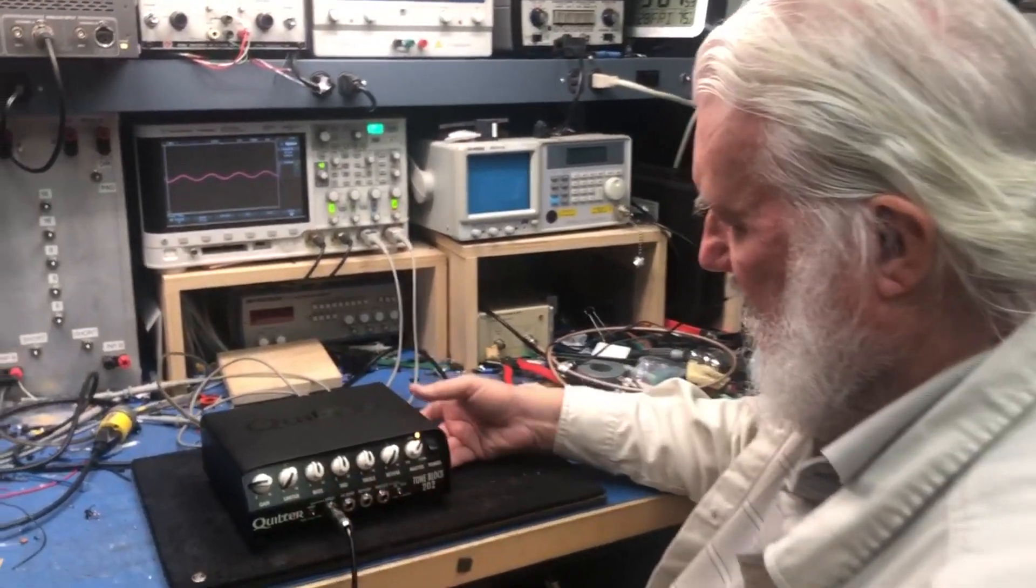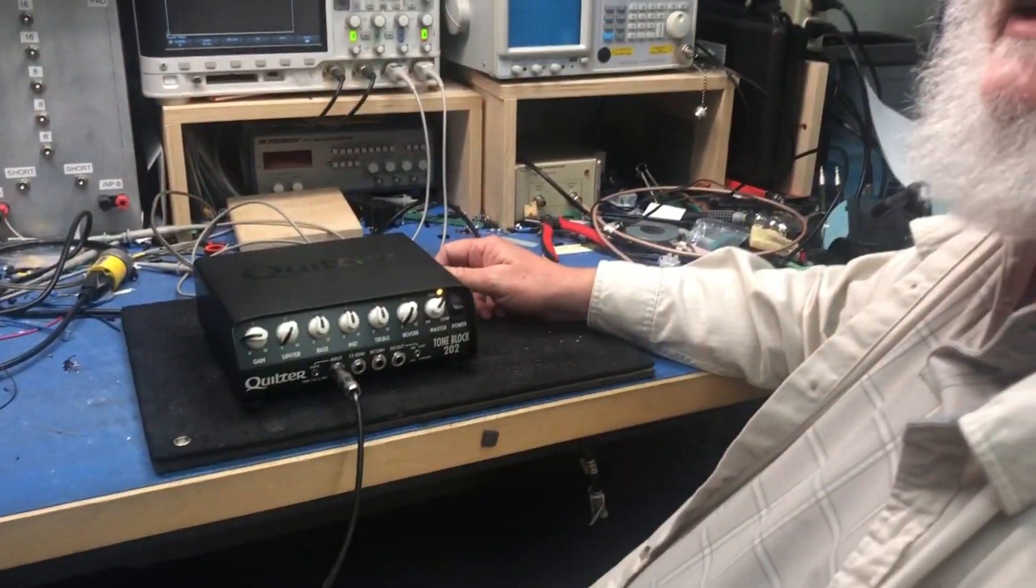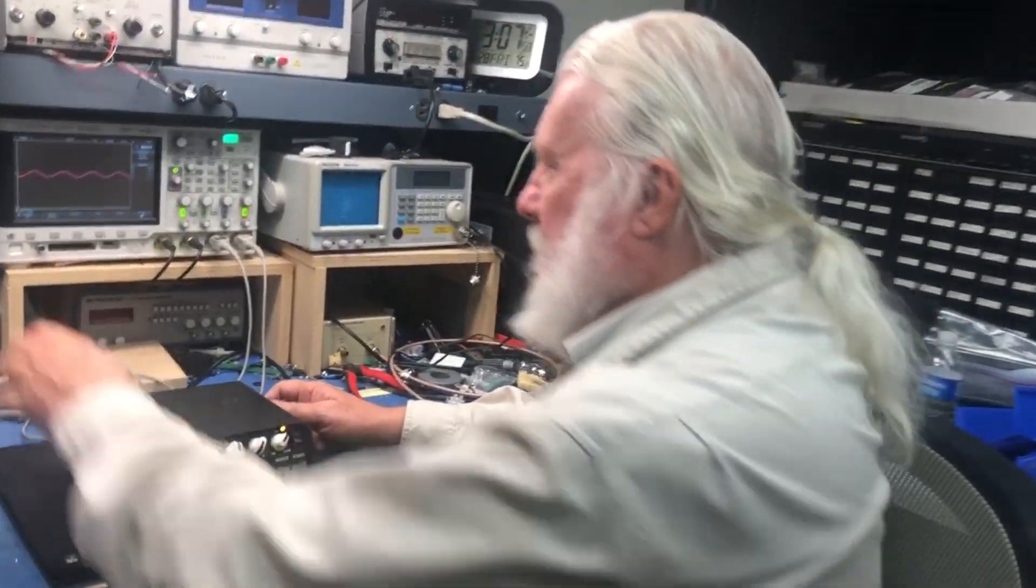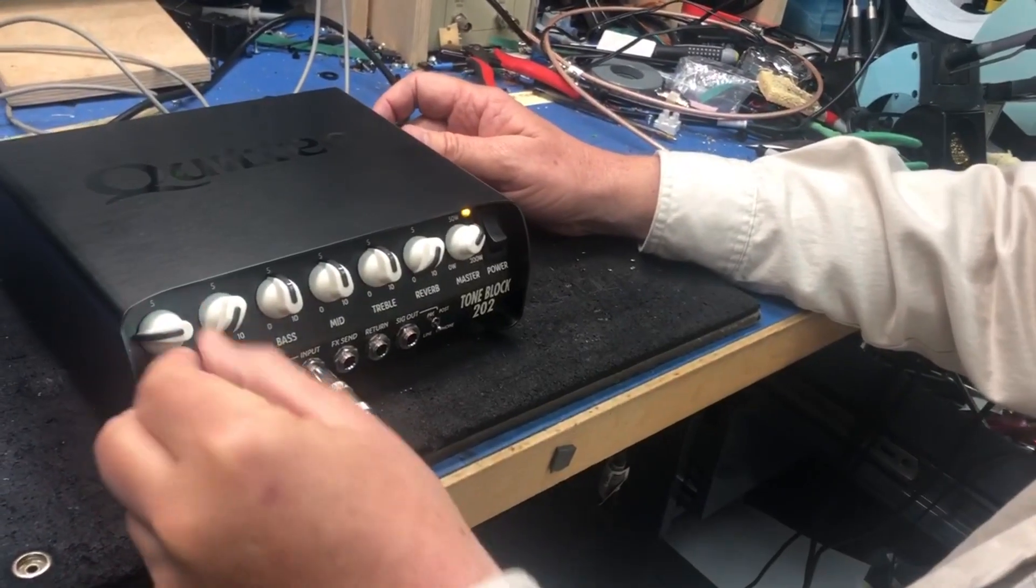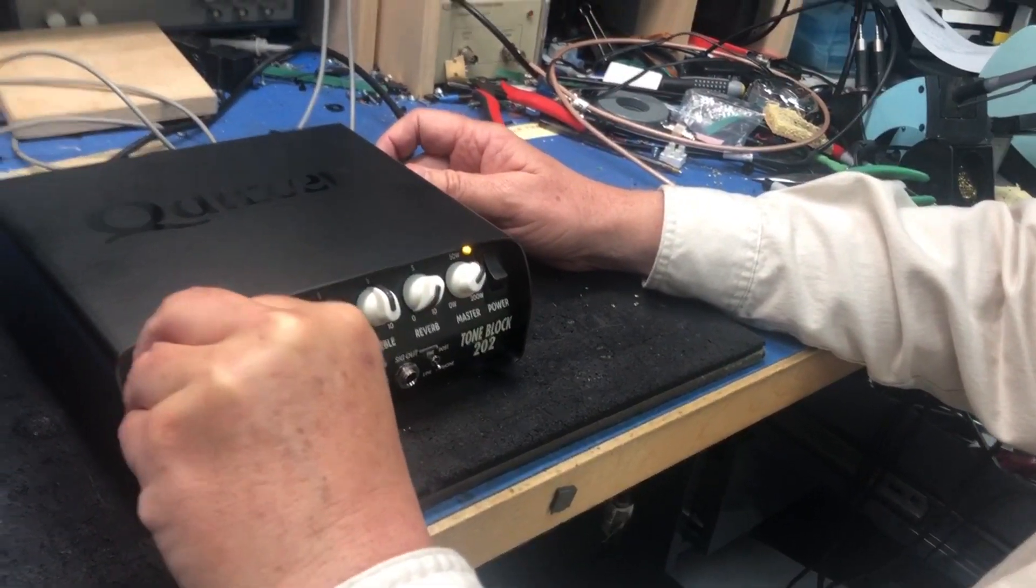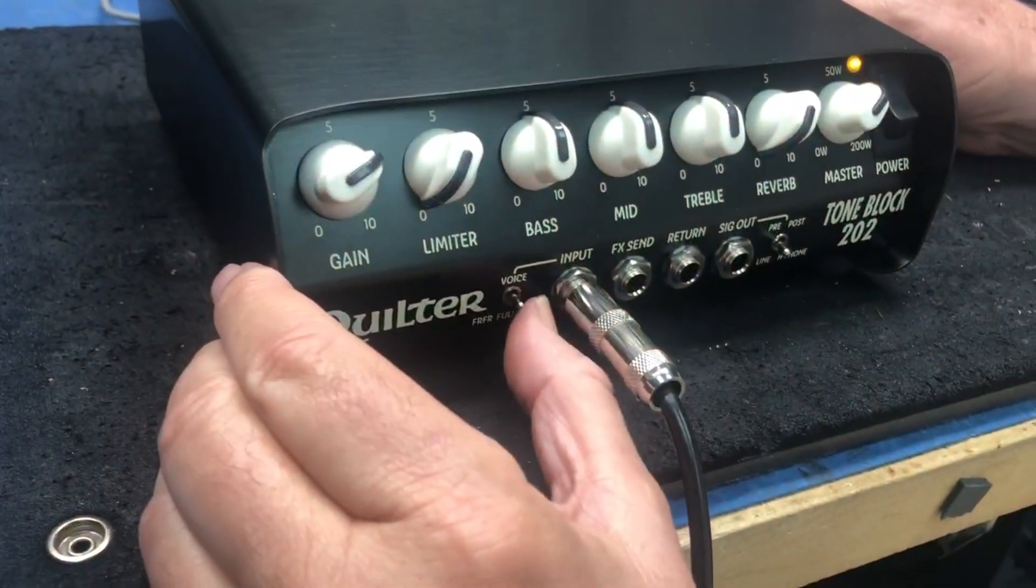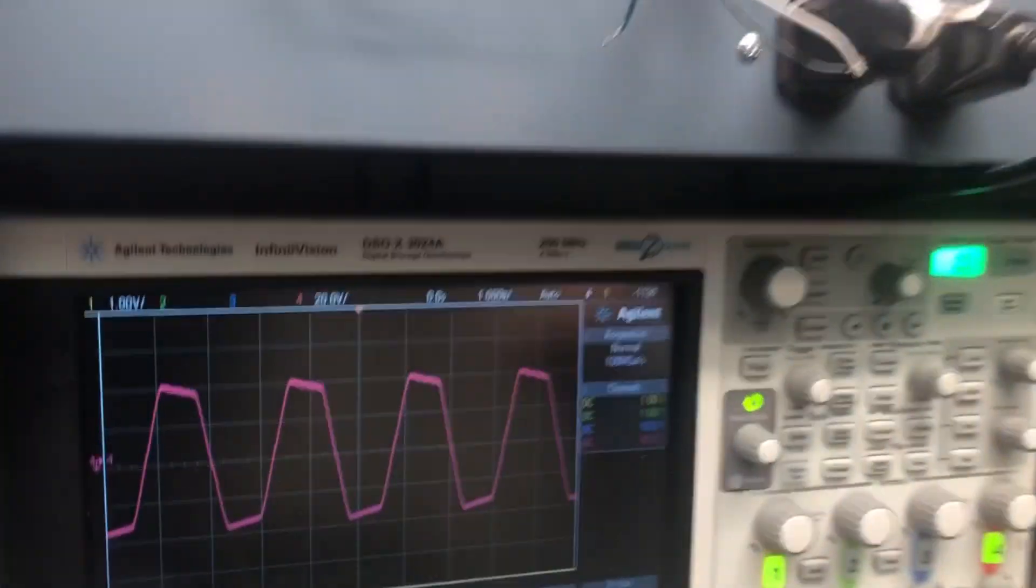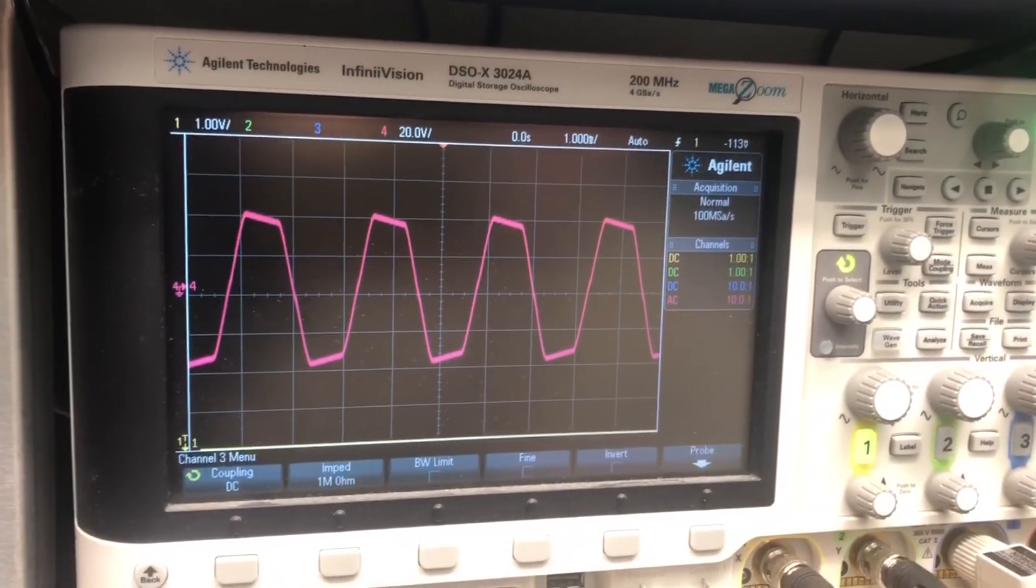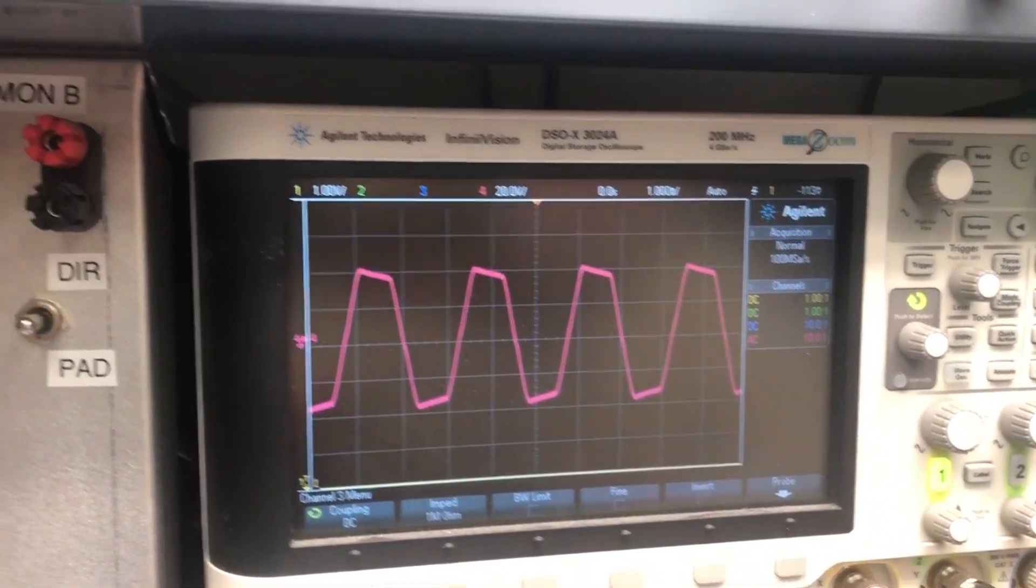Now, this is a ToneBlock 202. It has a very interesting new setting. Going back to the dummy load, we have a setting called FRFR, which turns the amp into a conventional solid-state amp. I'm going to flip the switch. You see virtually no change on the signal. But watch what happens into a real speaker.